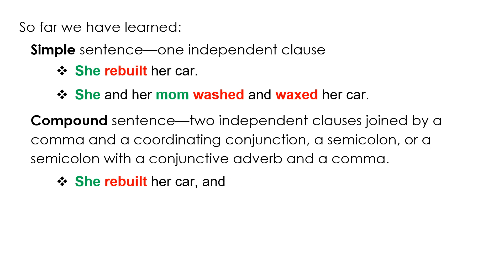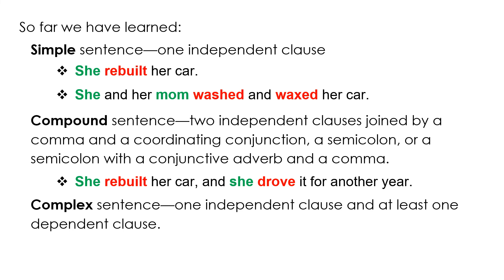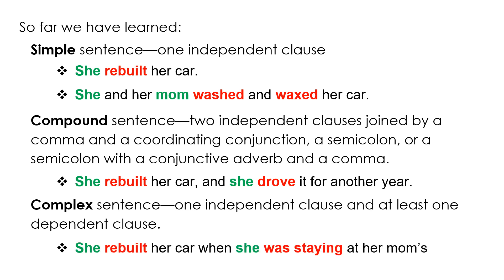Here's an example of a compound sentence: 'She rebuilt her car and she drove it for another year' — two independent clauses joined with the conjunction 'and' and a comma. And a complex sentence has one independent clause and at least one dependent clause, as in: 'She rebuilt her car when she was staying at her mom's.'